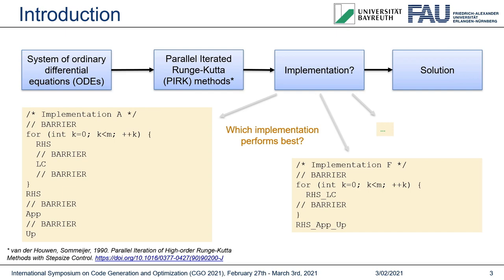This was done for implementation F, where we only need two kernels RHS-LC and RHS-APP. One could also try to only fuse some kernels — for instance, only fuse RHS and LC — which leads to more implementations. The vast majority of implementations, however, depends on how we actually implement our kernels.